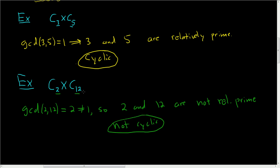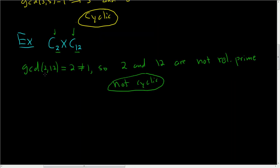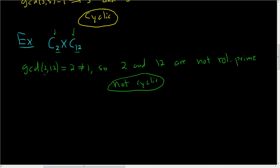So far we've only looked at two examples, and in both examples we only had two factors — these are called factors of the direct product. But in our statement we had K factors, so let's raise the bar a little bit and do something more interesting.